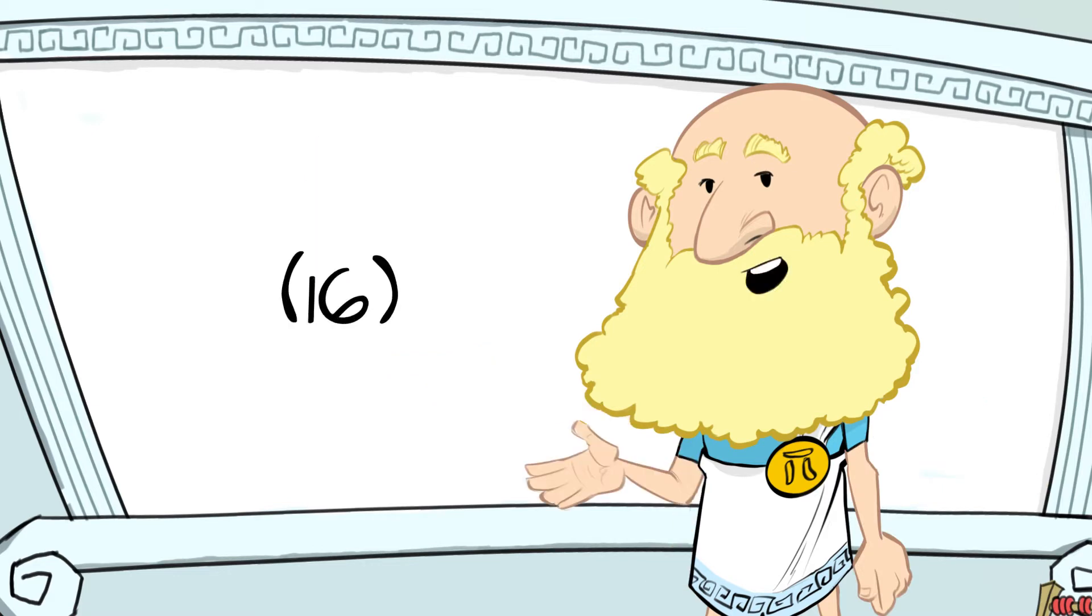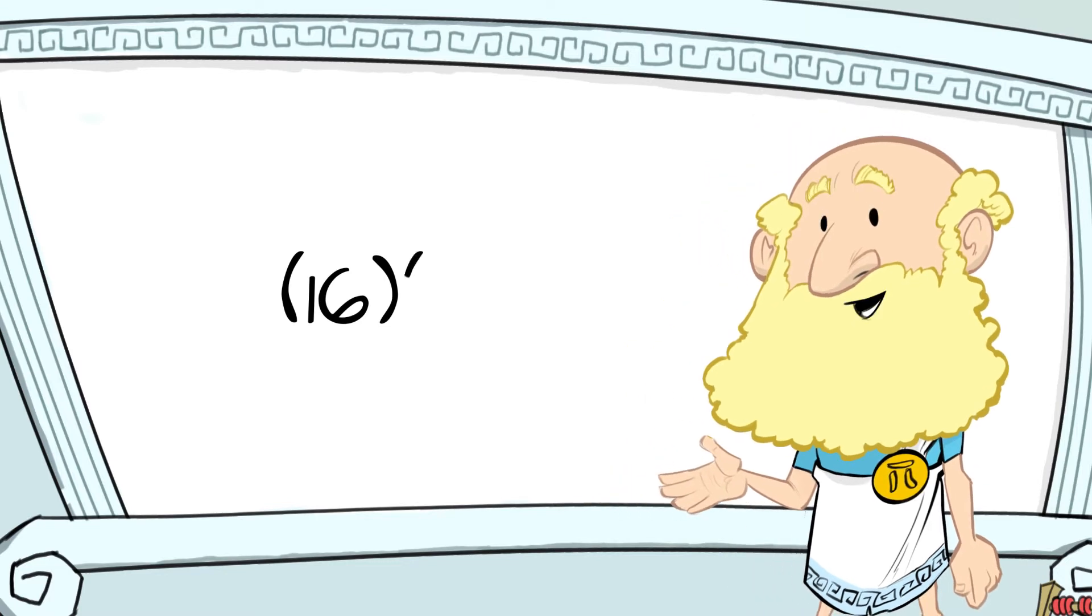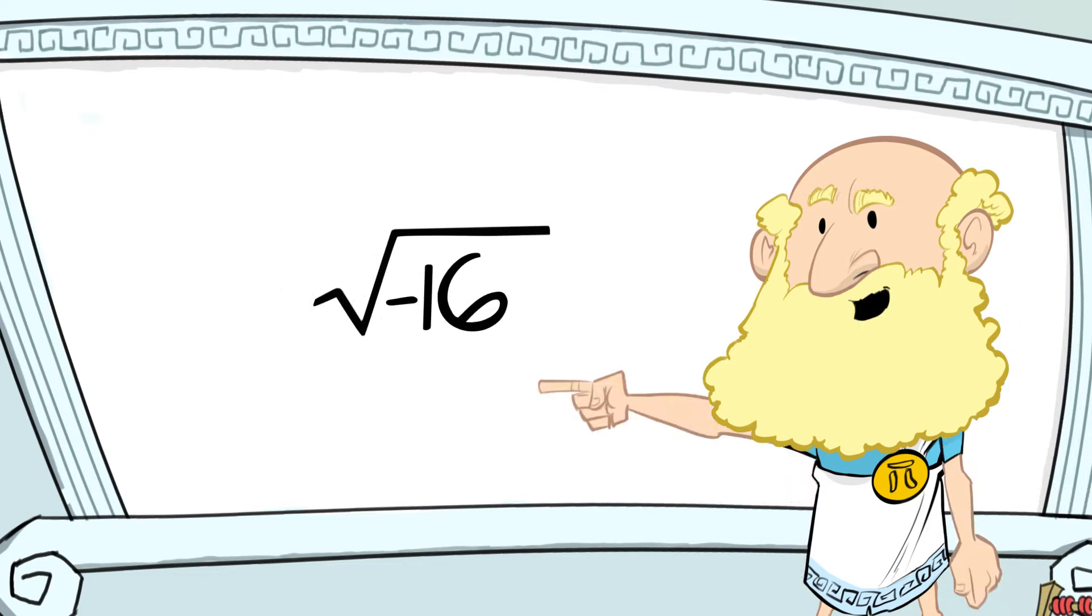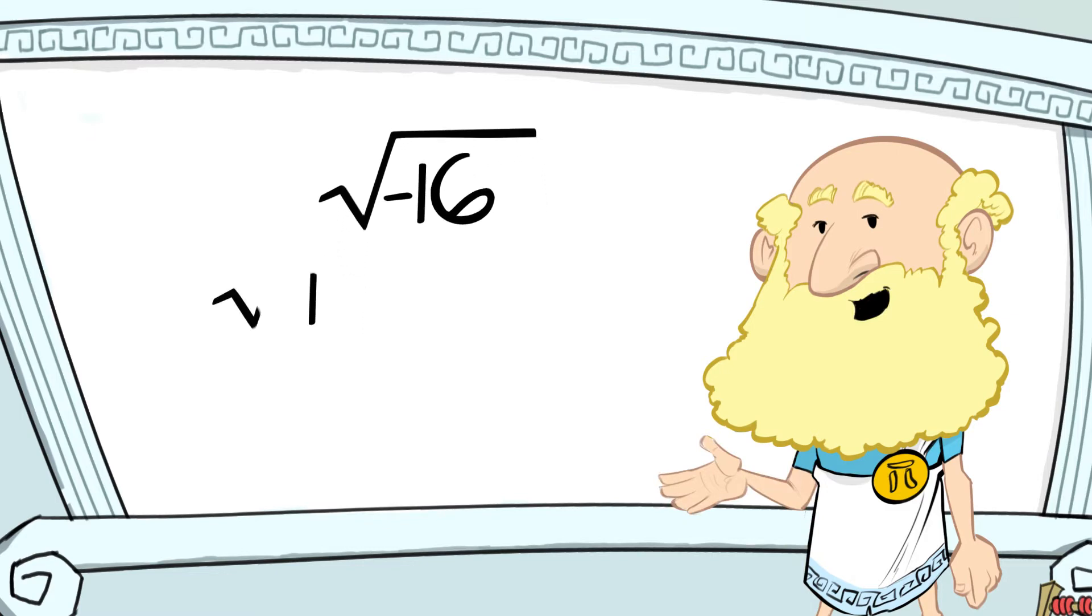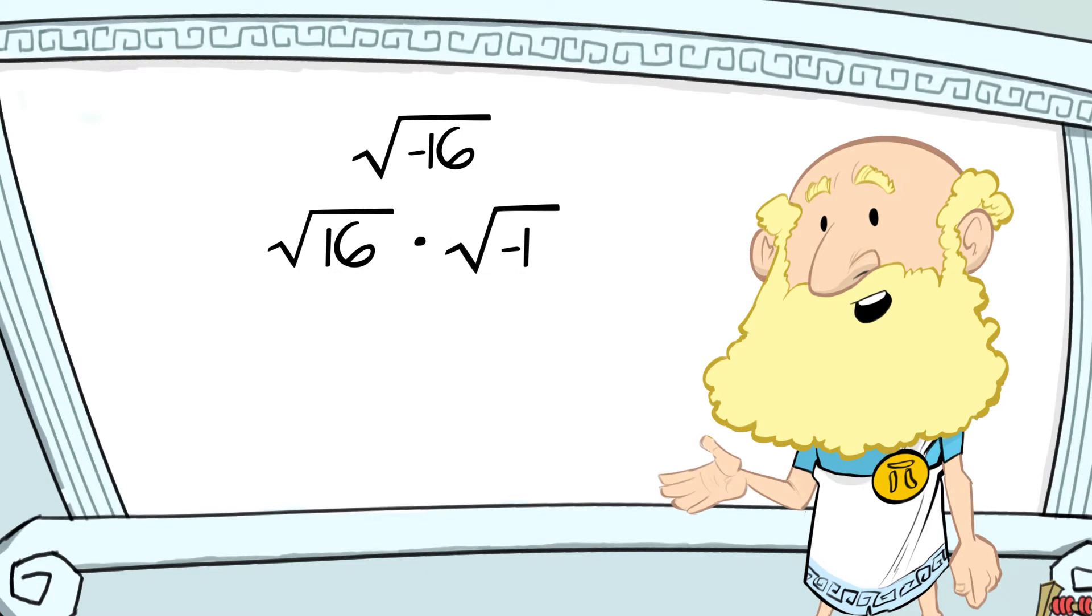We know that 16 is a perfect square, and that 16 times negative 1 is negative 16. So let's rewrite the square root of negative 16 as the square root of 16 times the square root of negative 1. We can simplify the square root of 16 and get 4.